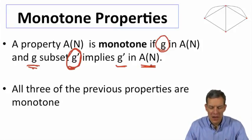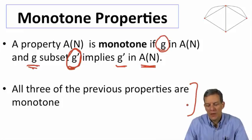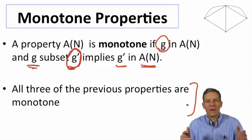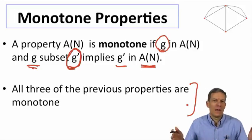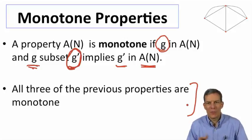You can go back and check. Every one of the properties we just talked about is a monotone property. Now something that wouldn't be a monotone property would be something like saying that there's an even number of links. So if I add an extra link, now it turns odd. It's no longer satisfying the property. So there could be some things that aren't going to be monotone, but a lot of the properties we might be interested in.